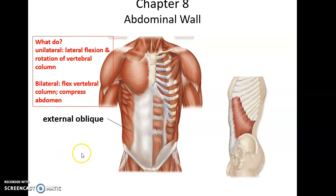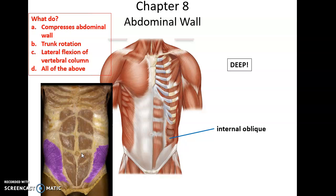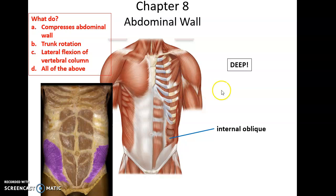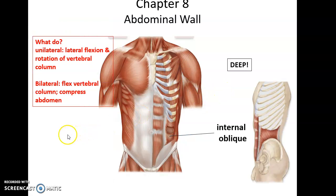The external oblique also compresses the abdomen. The internal oblique is deep to, or underneath, the external oblique. It does the same things: unilaterally, it allows lateral flexion and rotation of the vertebral column; bilaterally, both contracting helps flex the vertebral column and compress the abdomen.